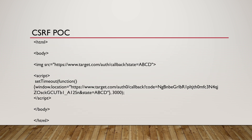Let's understand how the POC will look. Here you can see it will be an HTML page that an attacker can send by hosting it on a malicious website under their control. In this image tag you can see that once the victim opens this particular page in the browser where they are already logged into the target site, this piece of code is going to set the state parameter as ABCD.